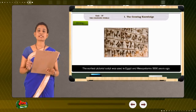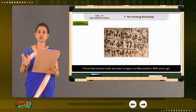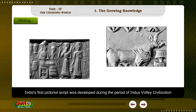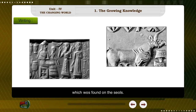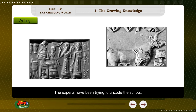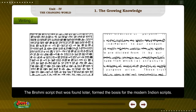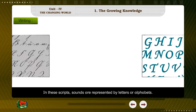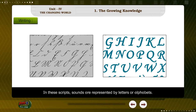The earliest pictorial script was used in Egypt and Mesopotamia 5,000 years ago. Later, such scripts were developed even in China and Japan. India's first pictorial script was developed during the period of the Indus Valley Civilization, found on seals. The Brahmi script that was found later formed the basis for modern Indian scripts like Devanagari, where sounds are represented by letters or alphabets.